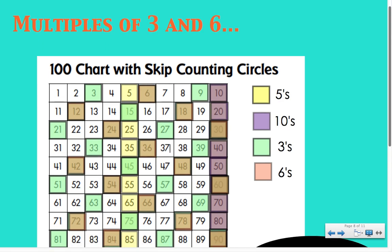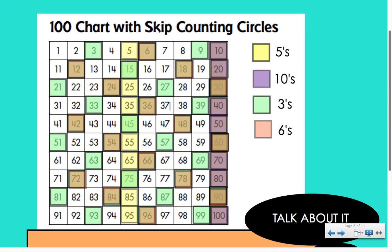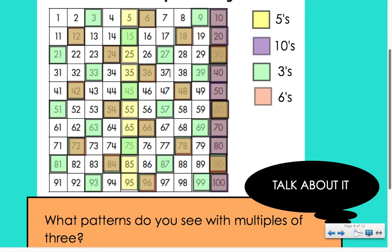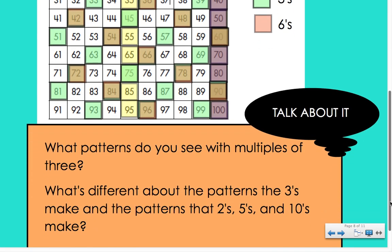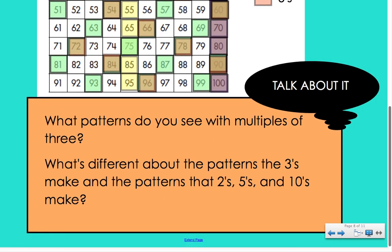So now you should have colorful hundreds charts filled with multiples of twos, threes, fives, tens, and sixes. Look at all your charts and talk about some of the patterns you see. Look especially at the multiples of three — what do you notice is different about the patterns of the threes compared to the patterns of the twos, fives, and tens? If you notice any other patterns, feel free to discuss them as well. Go ahead and pause while you're talking, and when ready come back and push play.